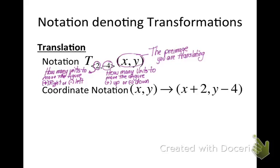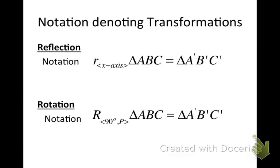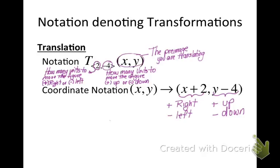Another kind of notation you can use is coordinate notation, and it takes in pre-image and it transforms it to either right or left or up or down using X plus or minus and Y plus or minus. And what's mentioned before, this X and Y is your pre-image, what you're actually translating.